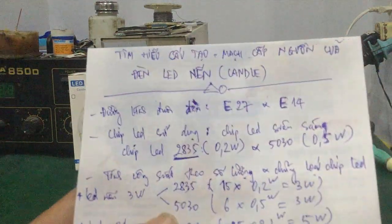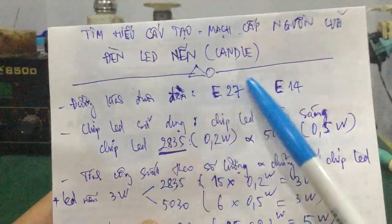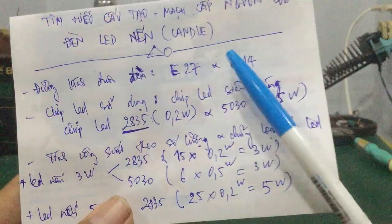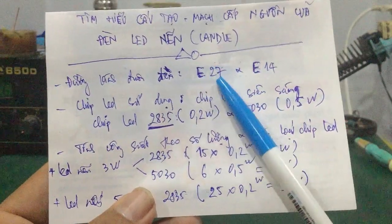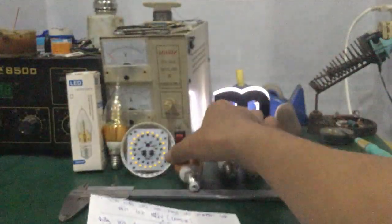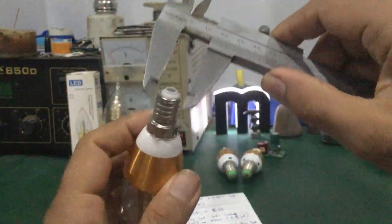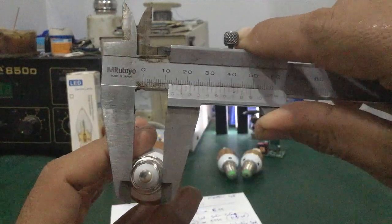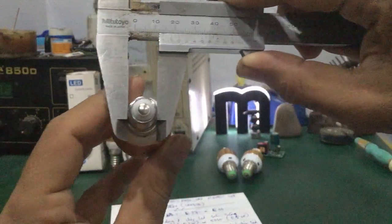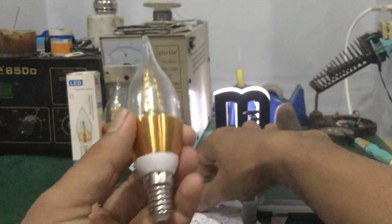Thứ nhất, cái đèn LED nến này có 2 loại đuôi đèn, ký hiệu là E27 và E14. E27 là cái đường kính của đuôi đèn là 27mm, còn E14 tương tự — đường kính của nó khoảng 14mm. Những cái đèn này ký hiệu là E14.